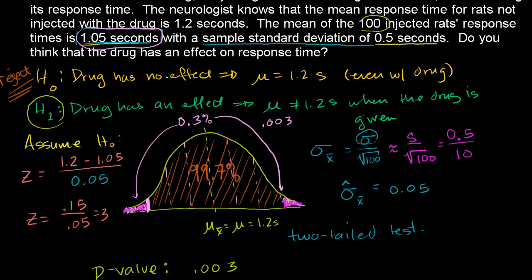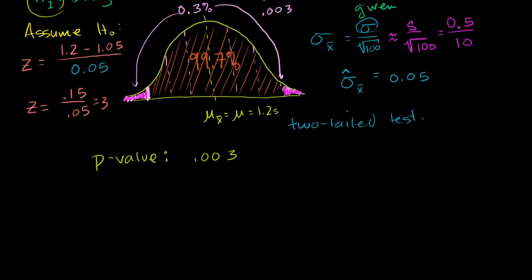You could have done a similar type of hypothesis test with the same experiment, where you only have a one-tailed test. And the way we could have done that is, we still could have had the null hypothesis be that the drug has no effect, or that the mean with the drug is still going to be 1.2 seconds, our mean response time.